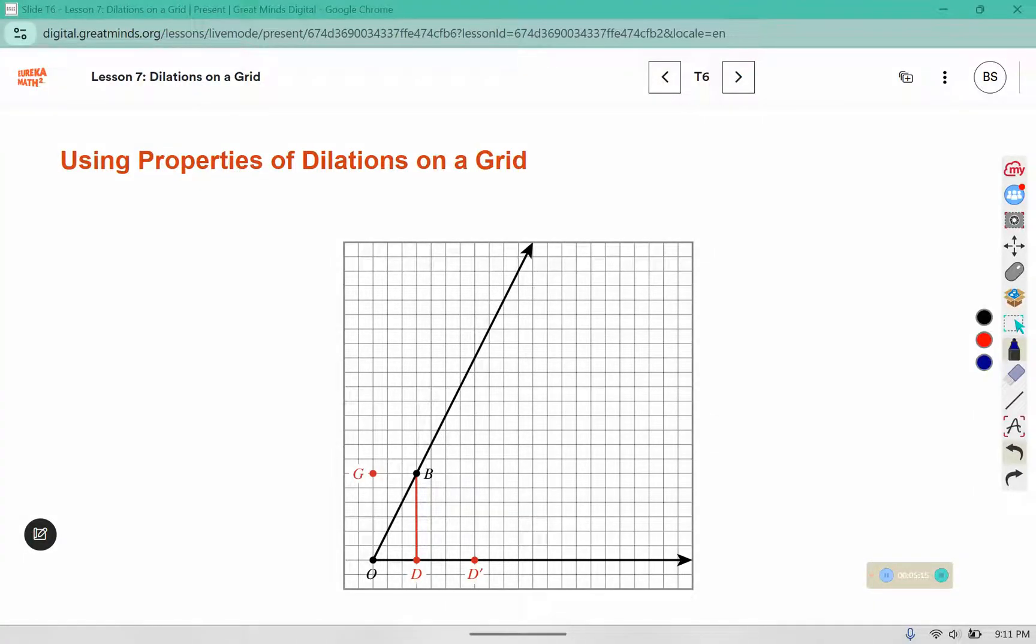We can use the scale factor that we see here. This was originally 3, and this new distance is 7. So we know that the scale factor is 7 thirds. B is also 3 away from O. So if we continue, 4, 5, 6, 7, it should end up here.